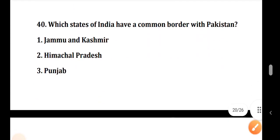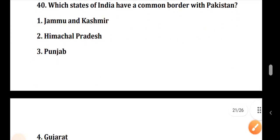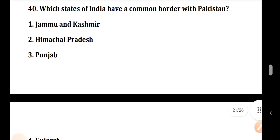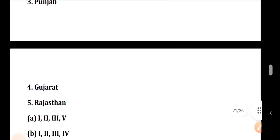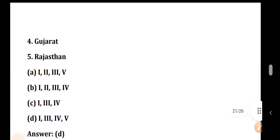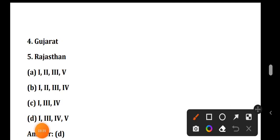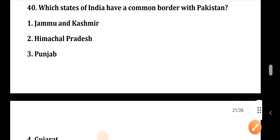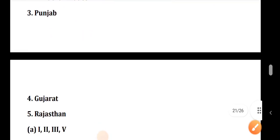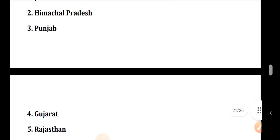Question number 40: Which states of India have a common border with Pakistan? The correct answer is Option D: 1, 3, 4, 5 — Jammu & Kashmir, Punjab, Gujarat, and Rajasthan.